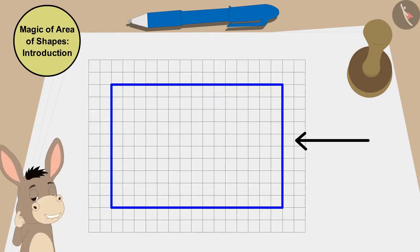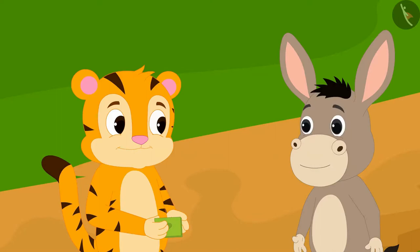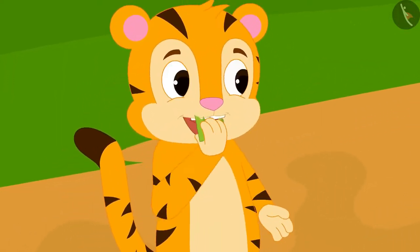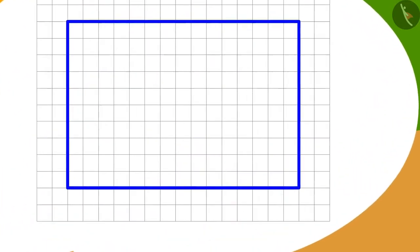Bholla could not find the answer to this riddle of Sher Khan. So Sher Khan ate that whole pistachio barfi and also taught Bholla how to solve this puzzle.